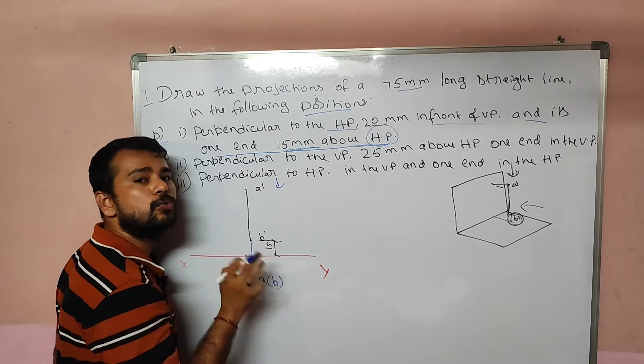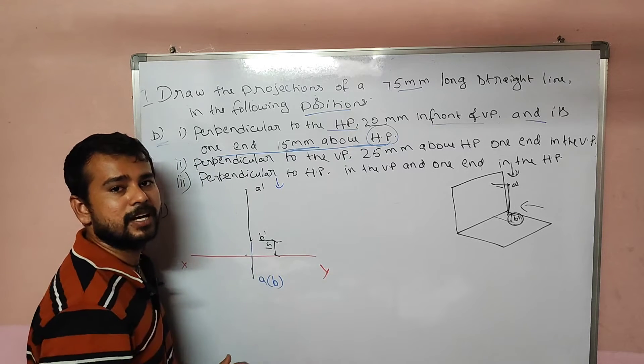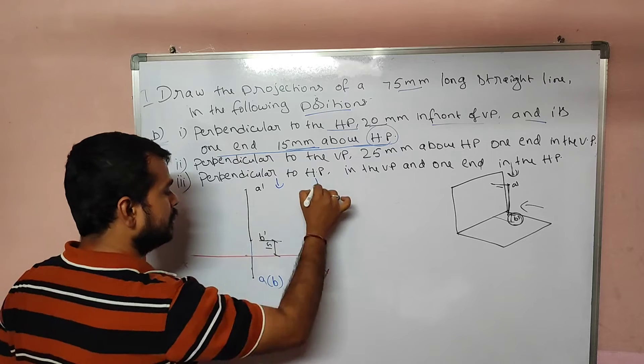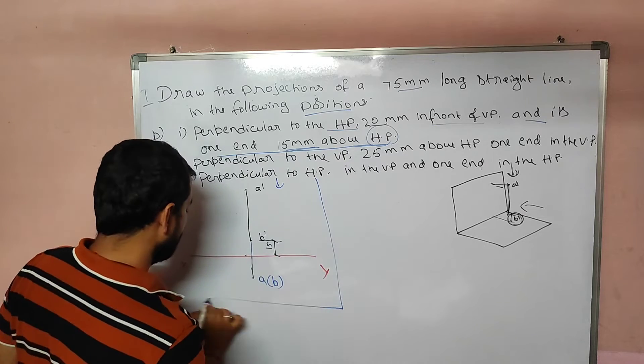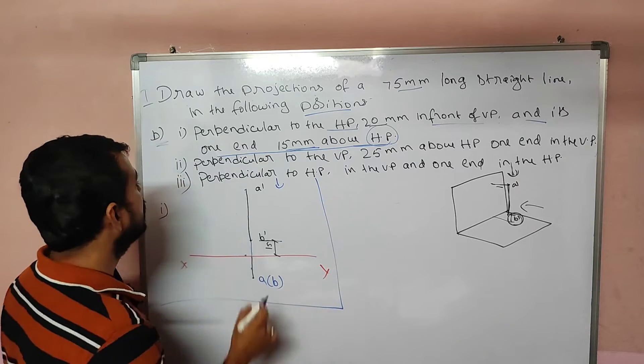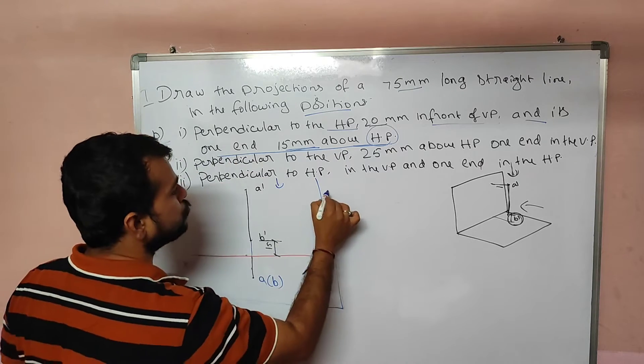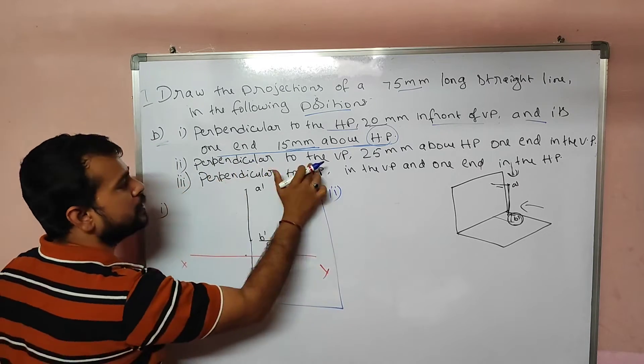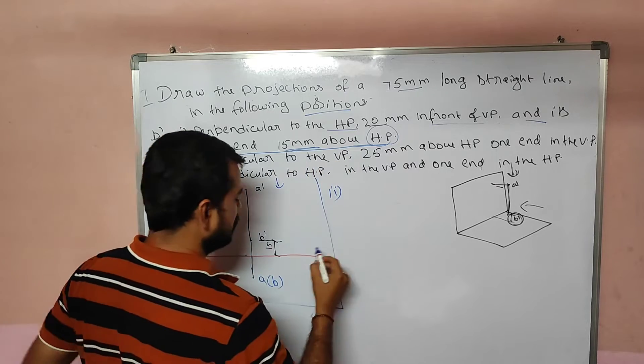This is on the top view. So the remaining point is A of B — it is on the top view. This is part 1. Now if we have part 2, we have it perpendicular to VP.